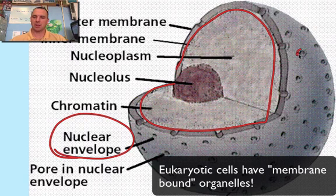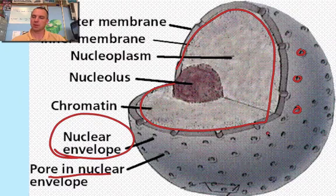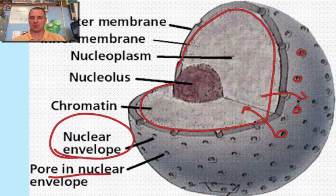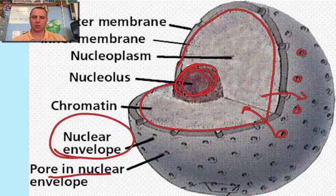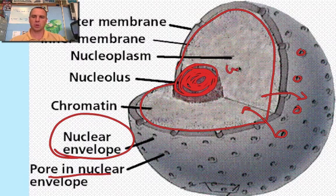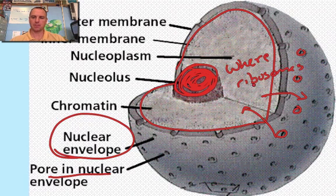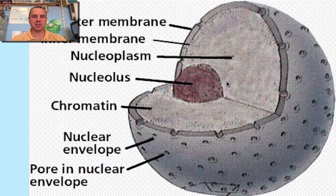Within the membrane, it has holes which are called pores, or nuclear pores. These pores in the nuclear envelope allow material to come into and out of the nucleus. And the last part is the nucleolus, which is often a dark structure inside the nucleus. The nucleolus is where ribosomes are made.